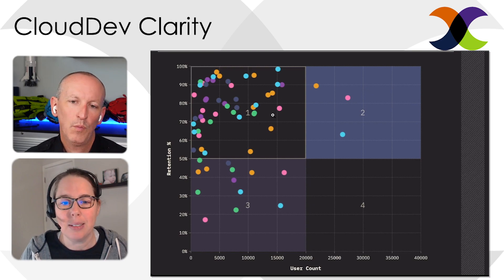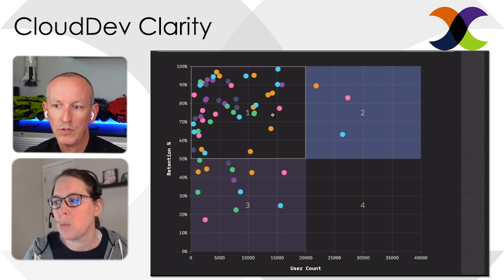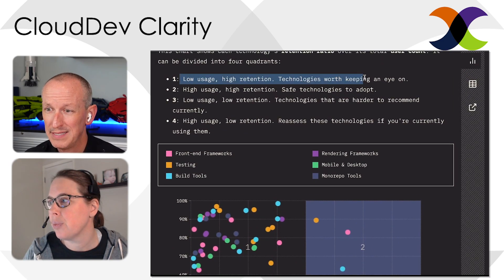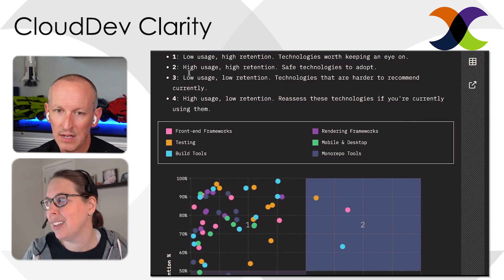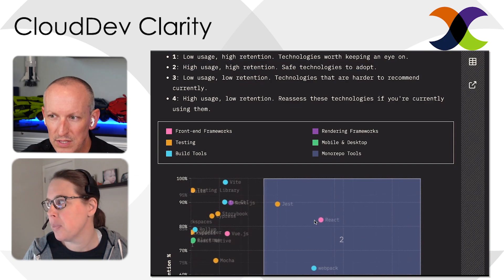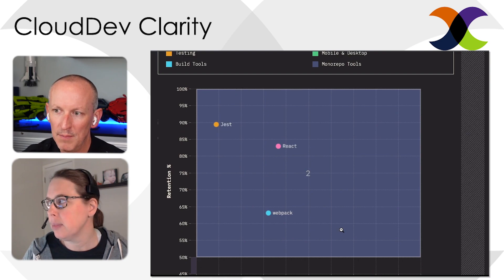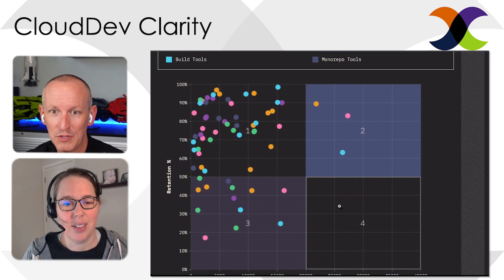The high-usage, high-retention quadrant is labeled 'safe technologies to adopt.' But I don't fully agree with that conclusion — there are only three things there, React and Webpack being two. What's interesting is that all three in that upper-right quadrant have a negative opinion trend over time. The whole site is beautifully designed with great visualizations and animations, and I'm pretty sure they built it with JavaScript.